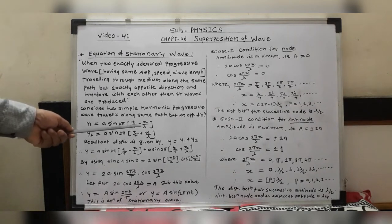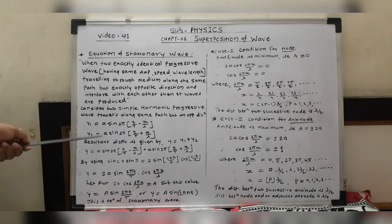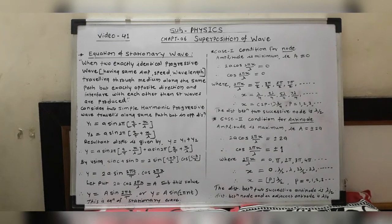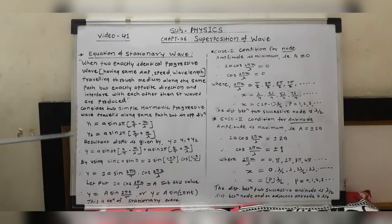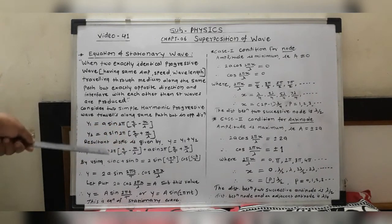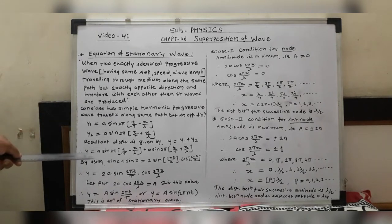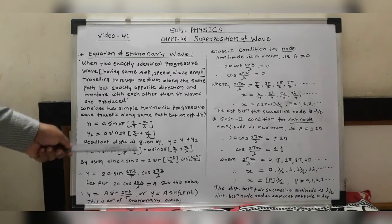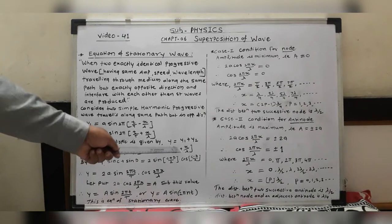The first wave is y₁ = a sin(2πt/T − 2πx/λ), and since the second wave travels in exactly the opposite direction, instead of minus we take plus: y₂ = a sin(2πt/T + 2πx/λ). The resultant displacement is given by y = y₁ + y₂, so substituting: y = a sin(2πt/T − 2πx/λ) + a sin(2πt/T + 2πx/λ).